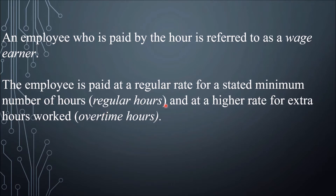The employee is paid at a regular rate for a stated minimum number of hours — regular hours, usually eight hours — and at a higher rate for extra hours worked, called overtime hours. So if you work 10 hours, the two extra hours are the overtime hours when you have a regular working period of eight hours.